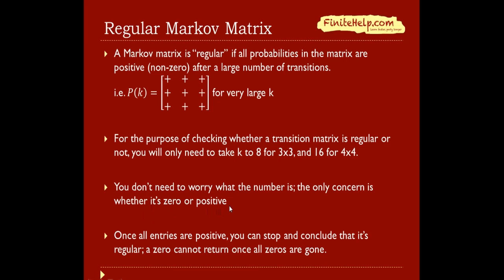You're going to take P, multiply itself over and over. If you see that once all entries are positive, then you can stop and conclude that it is regular, because this is the definition of regular. A zero can't return after all the zeros are gone. If you keep multiplying and the zero never goes away, then it's not regular.